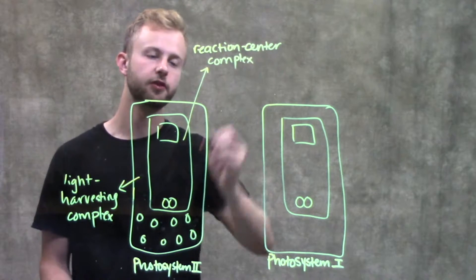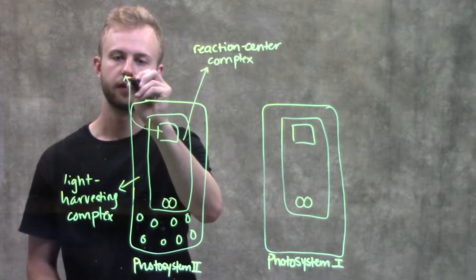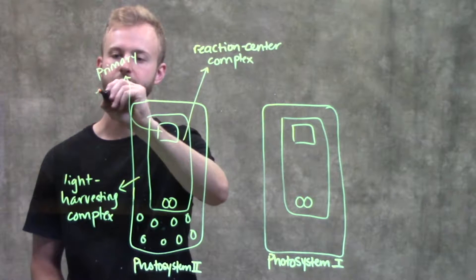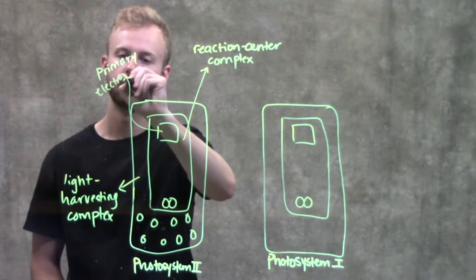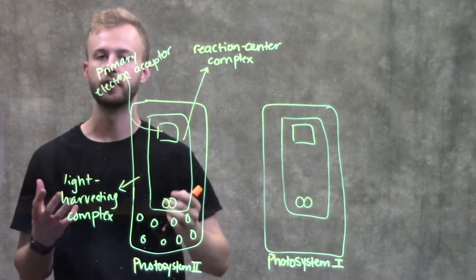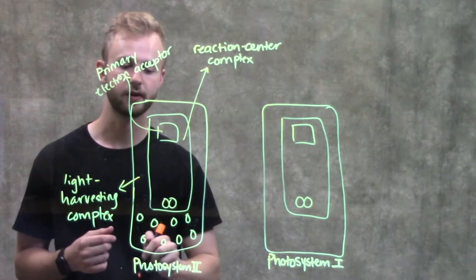In the reaction center complex, we have two components really. This box up here is going to be our primary electron acceptor. The job of the primary electron acceptor is to accept all of the excited electrons from these two molecules right here.